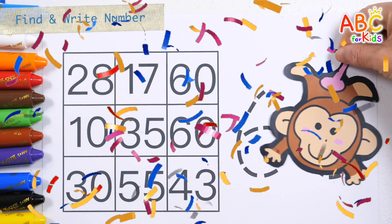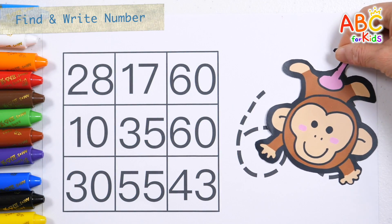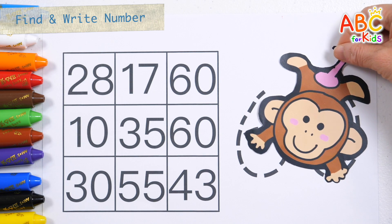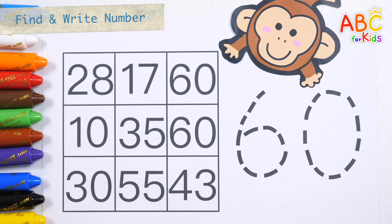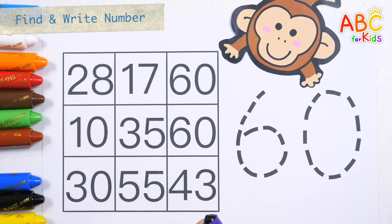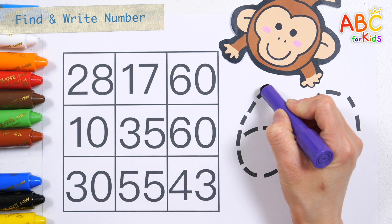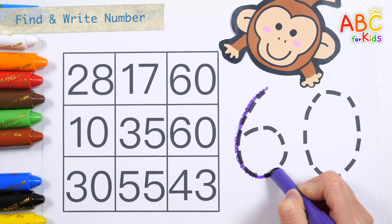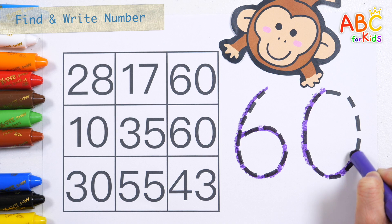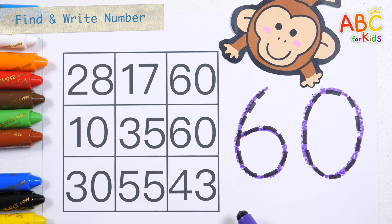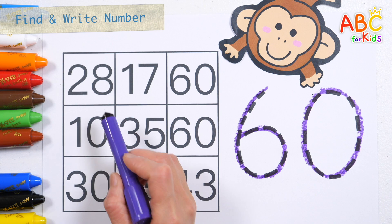What number is behind the monkey? 60! Let's trace the dotted line and write down the number 60. This time, let's find the number 60 in the table on the left and circle it.